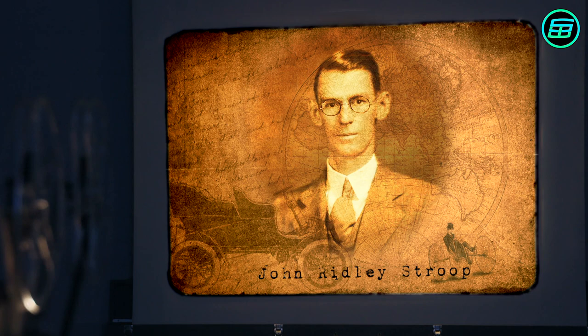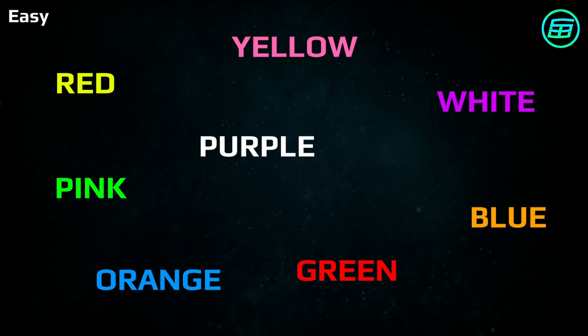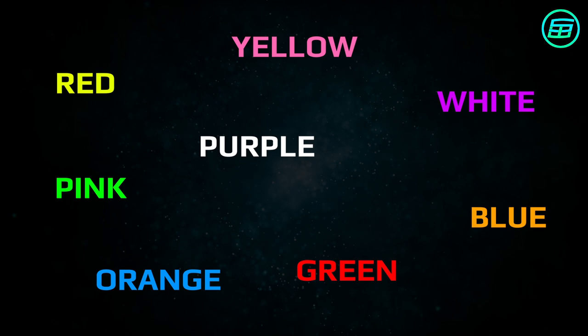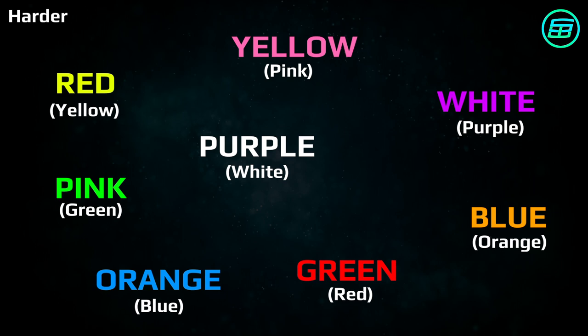According to the Stroop Effect we can easily read the names of colors such as red, blue, and yellow regardless of the color in which they're written, but when we try to name the colors it's harder and takes more time. For the test to be meaningful the words need to be in your native language, or in a second language that you can speak fluently.